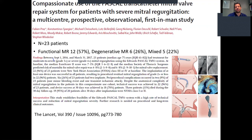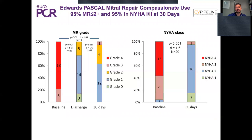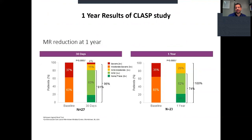The first application was published in The Lancet with 23 compassionate use patients, either DMR or FMR, and showed that this device is effective in reducing mitral regurgitation, with clinical improvement in terms of NYHA class status.